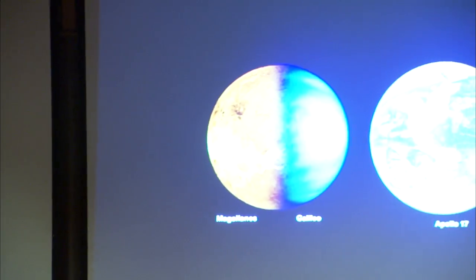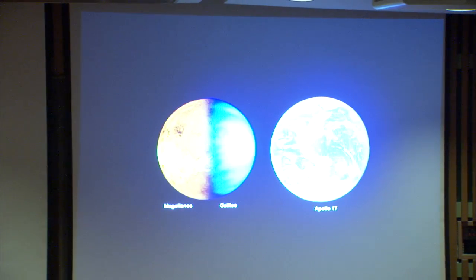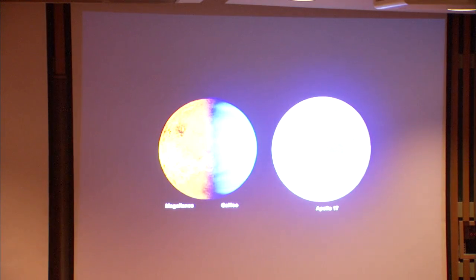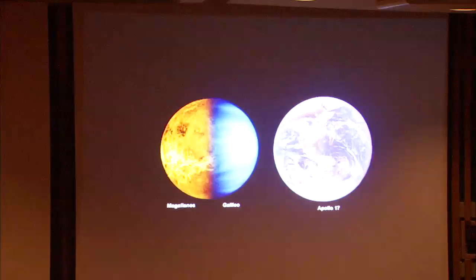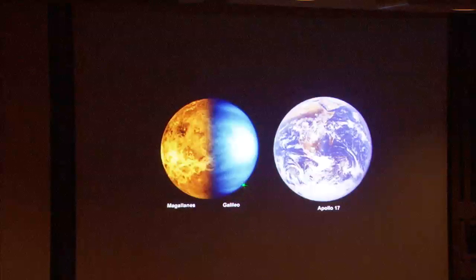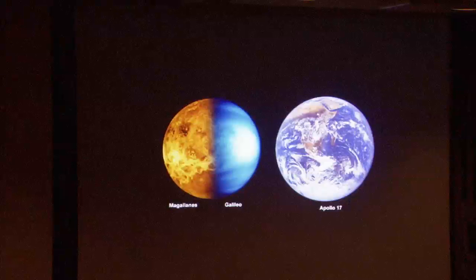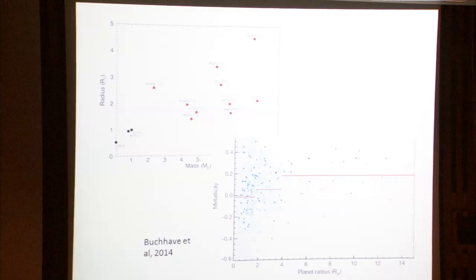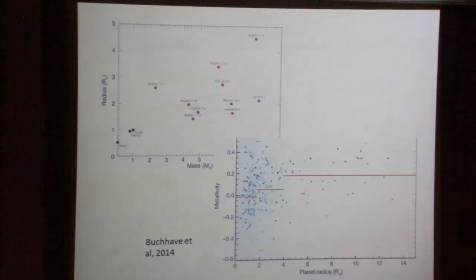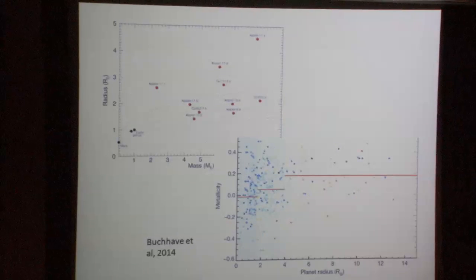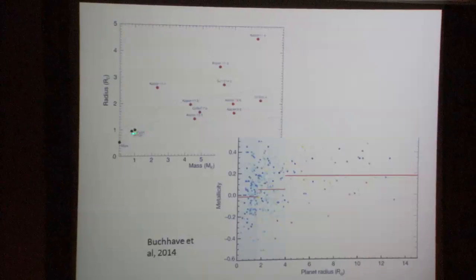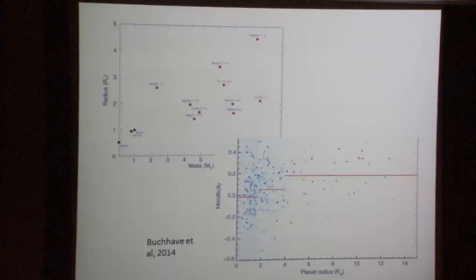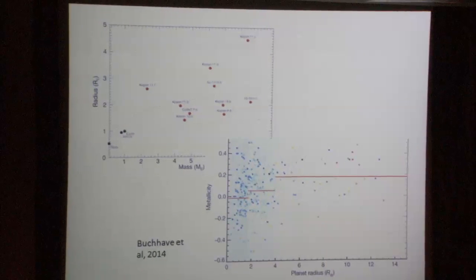We're dealing with a planet, Venus, that is very similar in size and mass to the Earth — it even looks similar in the UV, as you see in this picture taken by Galileo. But of course it has a very different atmosphere and surface. From the perspective of planets around other stars, we see Venus and Earth very close to each other in the space of radius versus mass, compared to the extraordinary diversity of planets around other stars.